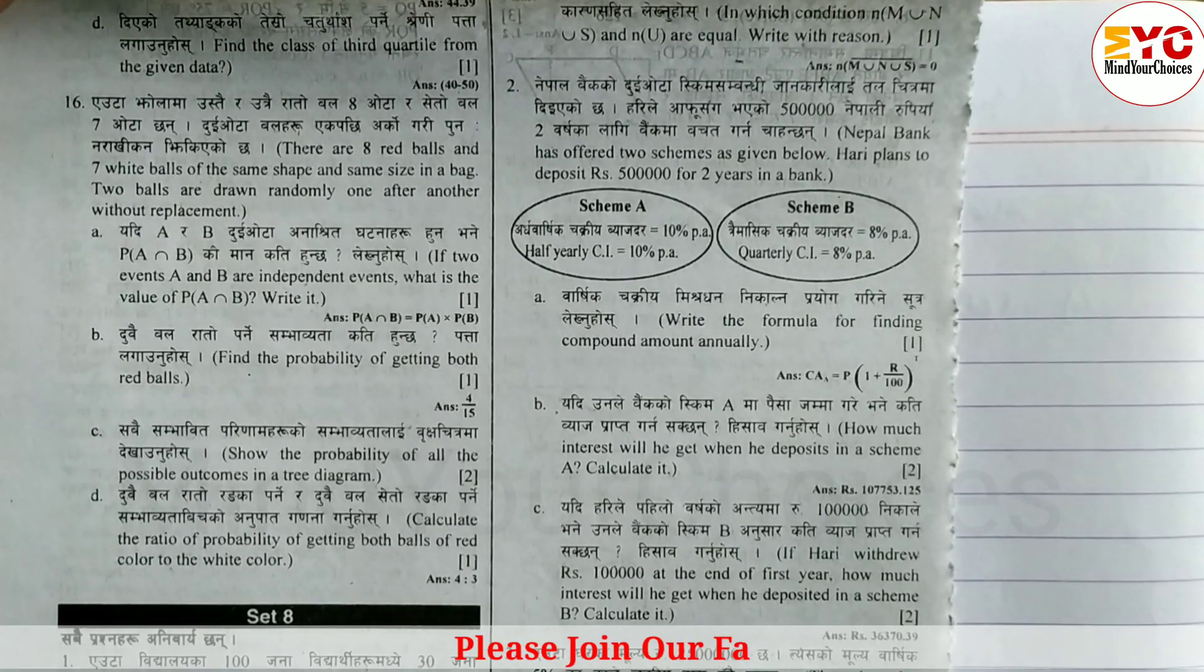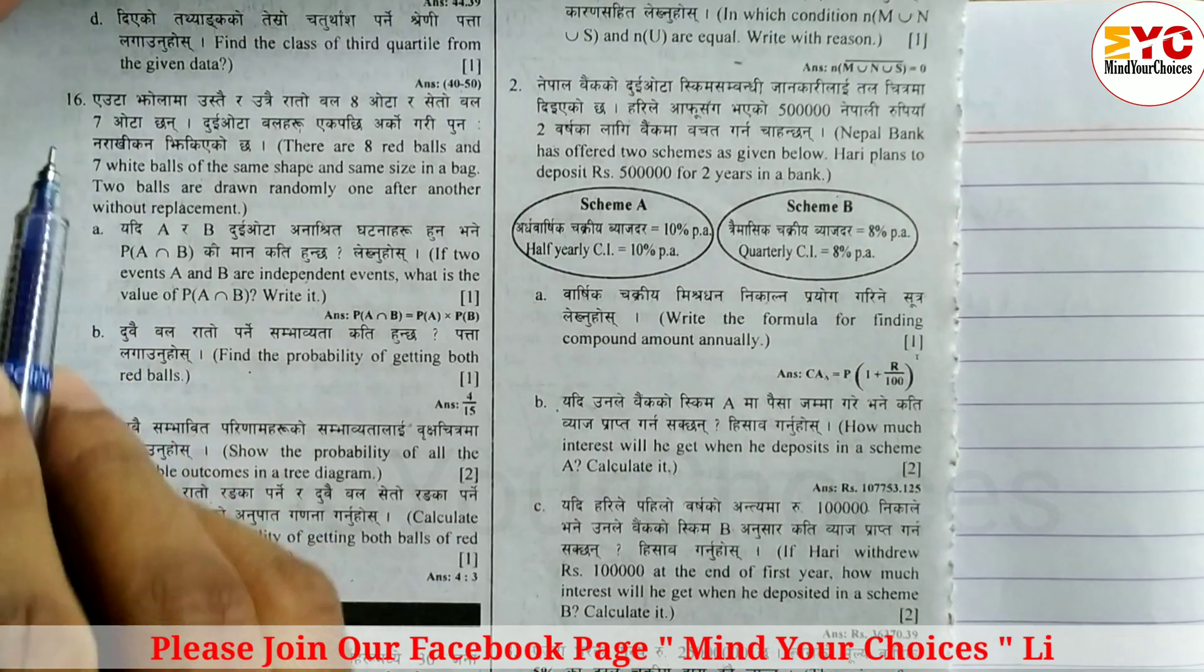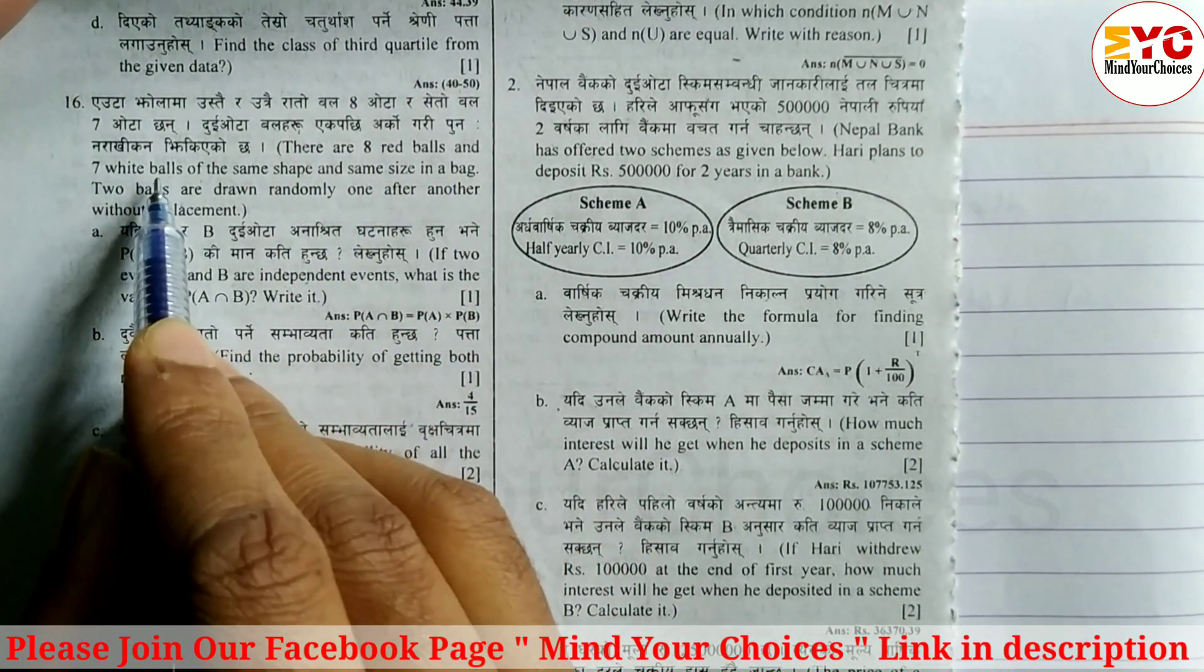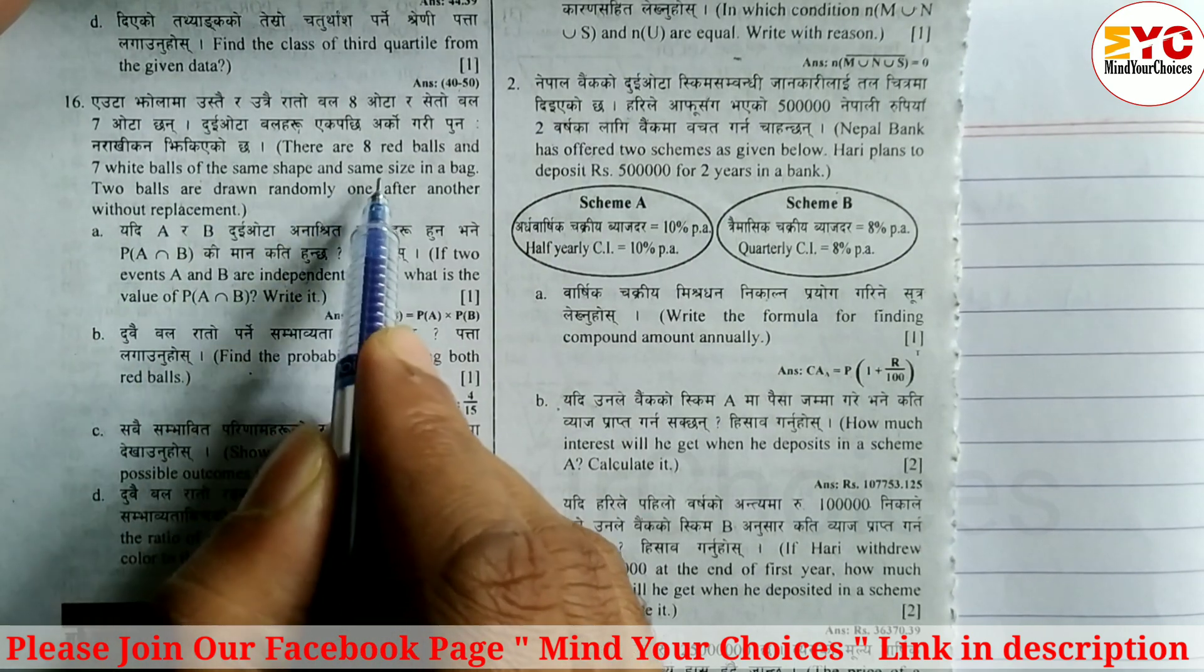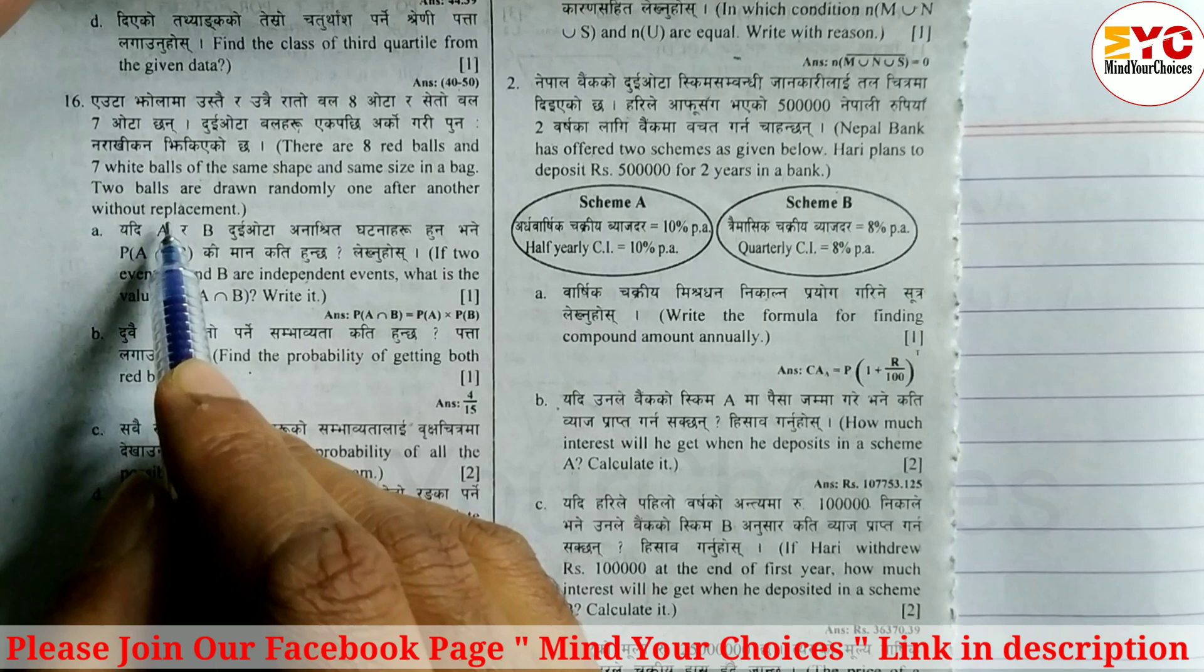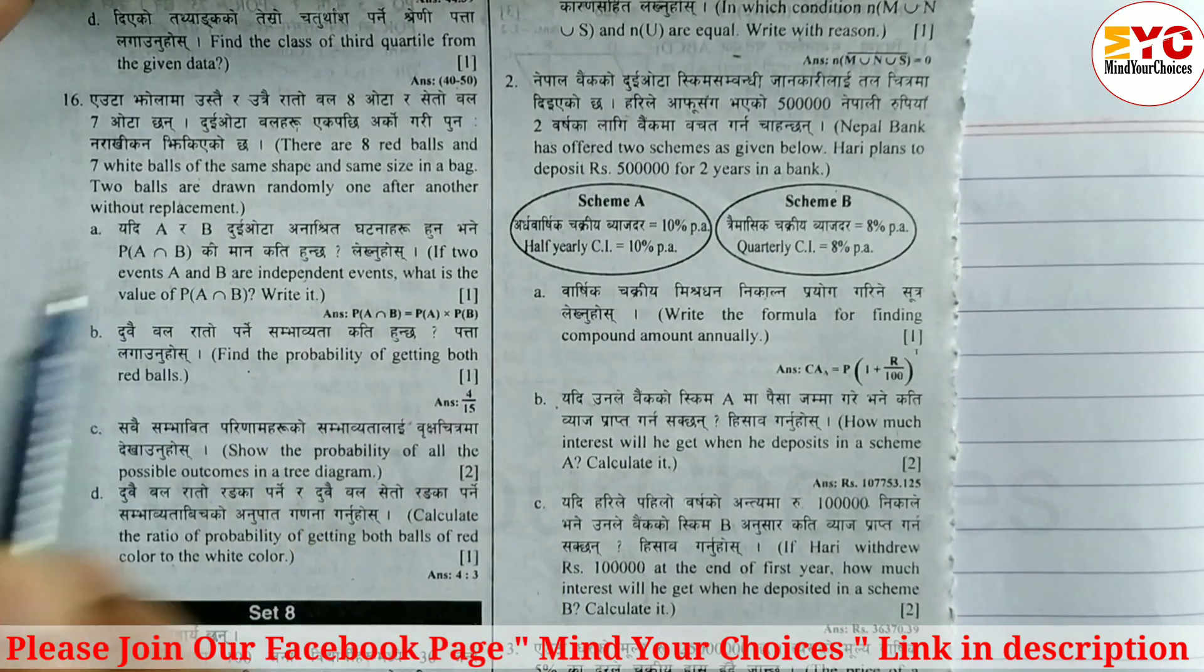Hello everyone. Today, we have set 7, question number 16, a probability question. There are 8 red balls and 7 white balls of the same shape and same size in a bag. Two balls are drawn randomly one after another without replacement. Without replacement, the ball will not be replaced.